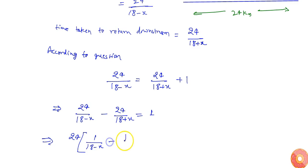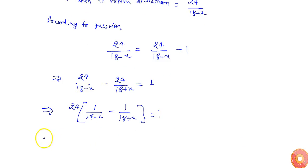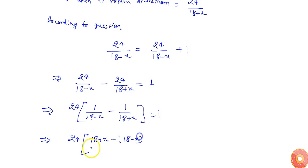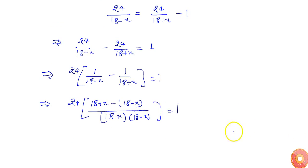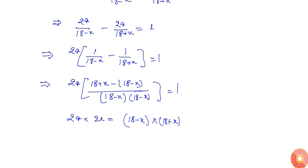I can write this as 24 times [1/(18 minus x) minus 1/(18 plus x)] equals 1. This gives 24 times [(18 plus x) minus (18 minus x)] divided by [(18 minus x)(18 plus x)] equals 1, which simplifies to 24 times 2x equals (18 minus x)(18 plus x).